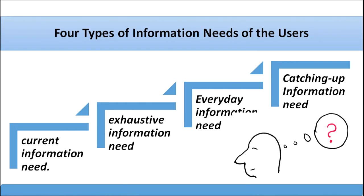There are various types of information needs of the user. These are broadly categorized into four types: current information need, exhaustive information need, everyday information need, and catching-up information need.